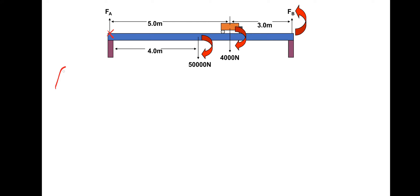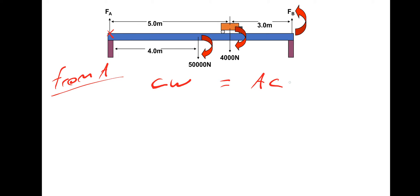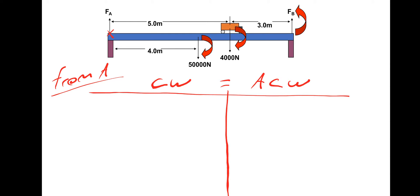So we take moments from A and apply the principle of moments, which is the sum of the clockwise turning effects equals the sum of the anticlockwise turning effects. I would advise setting out a grid: from A, anything going clockwise put on the left-hand side, anything going anticlockwise put on the right-hand side.